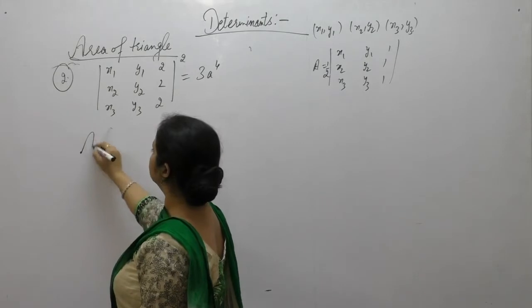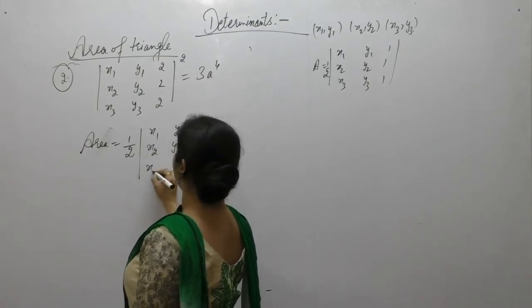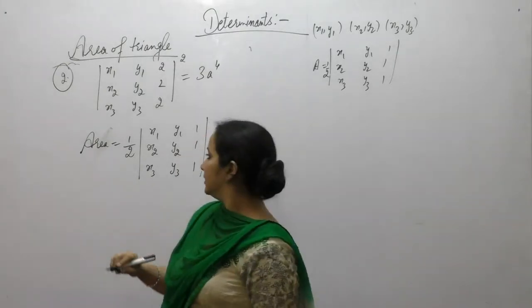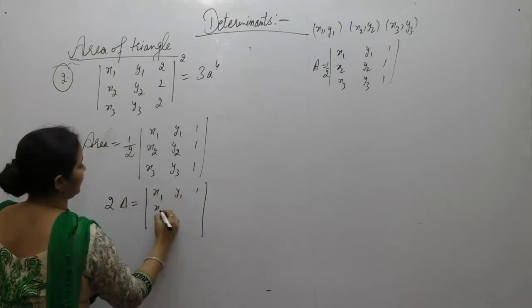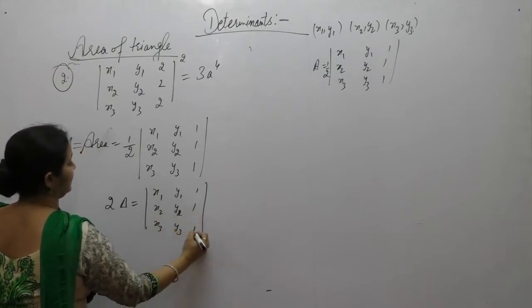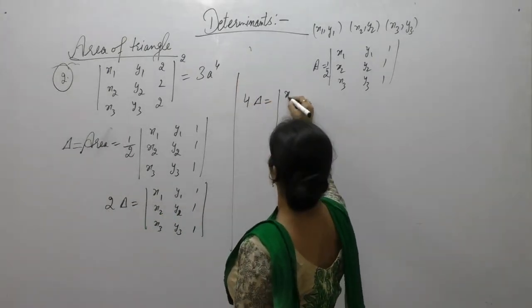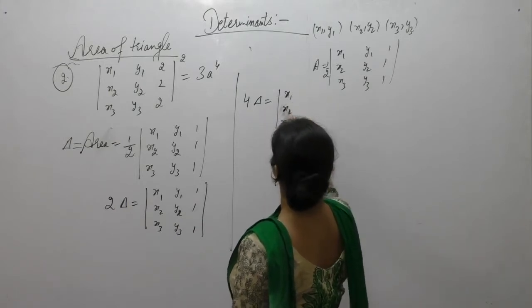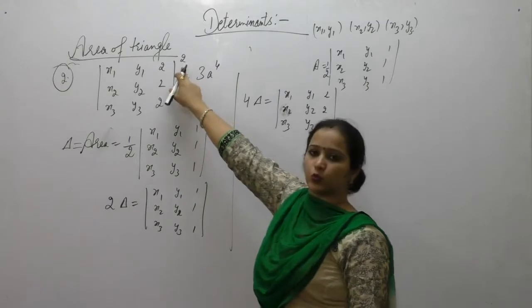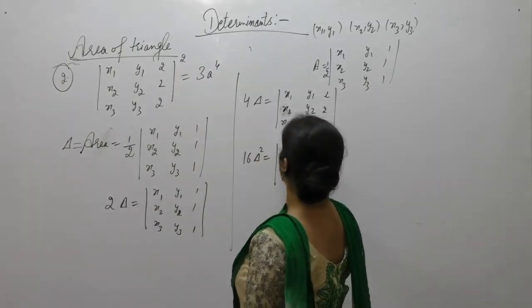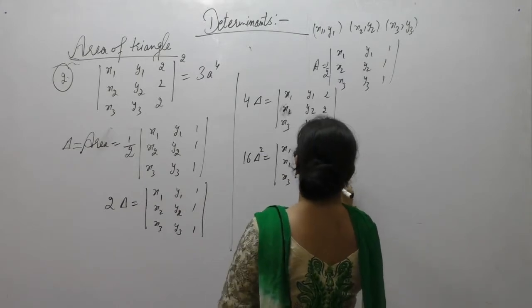Let this area be delta. So 2 times delta equals the determinant. If we multiply it by 2, then 4 delta equals the determinant with rows (x1,x2,x3), (y1,y2,y3), (2,2,2). Now squaring both sides, 16 delta squared equals that determinant whole squared. We know that area of equilateral triangle equals √3/4 times side squared, and side is given as A.